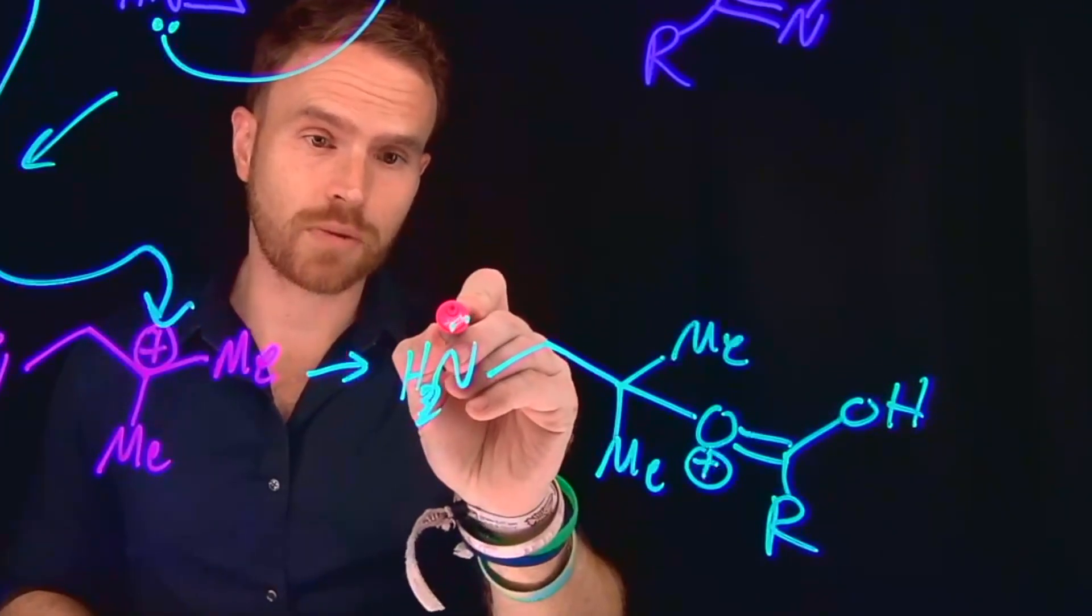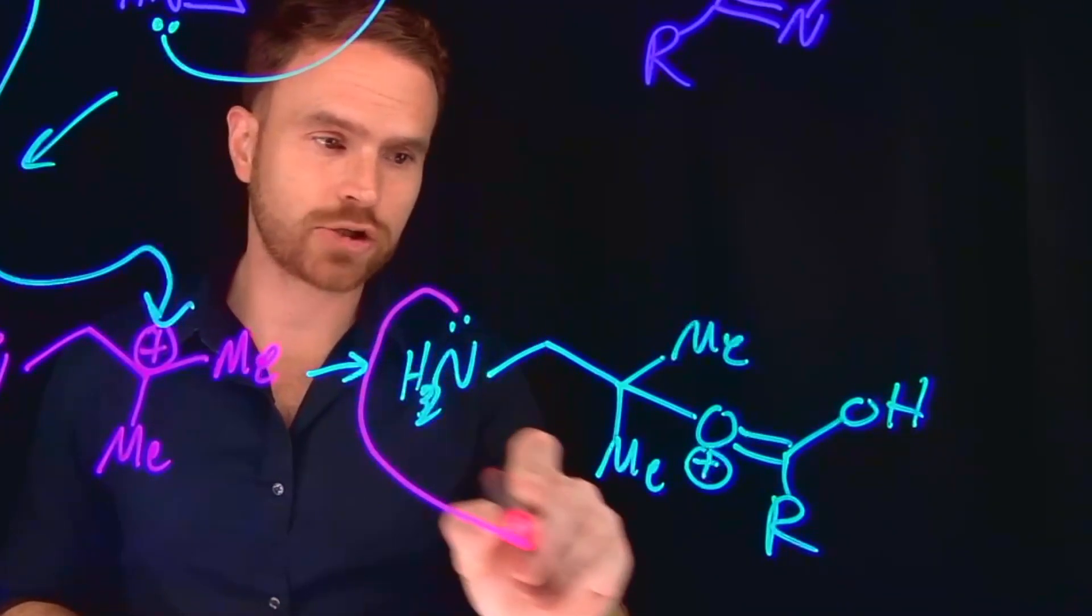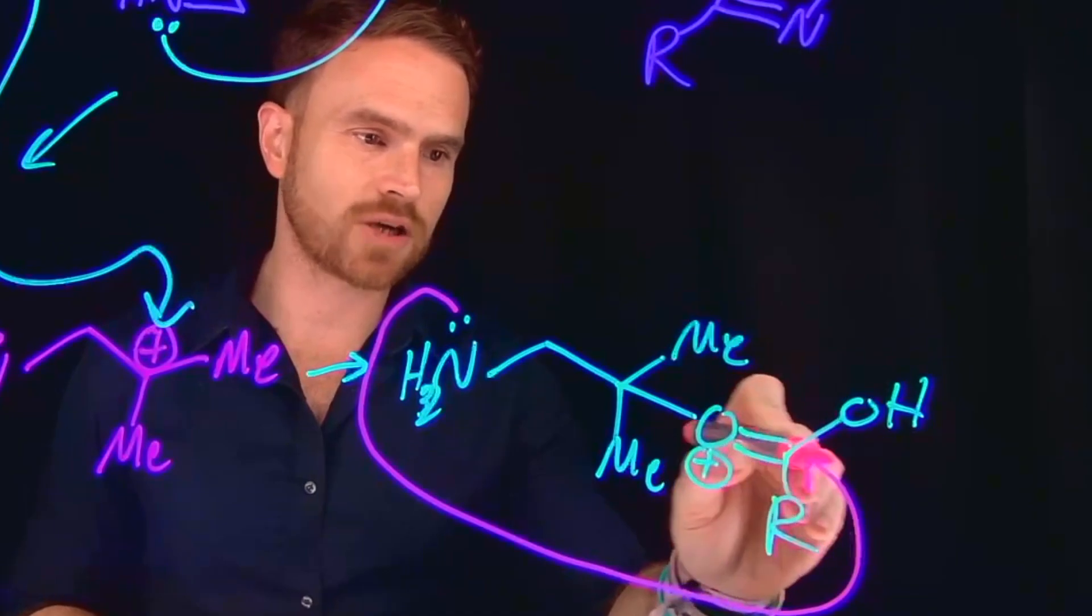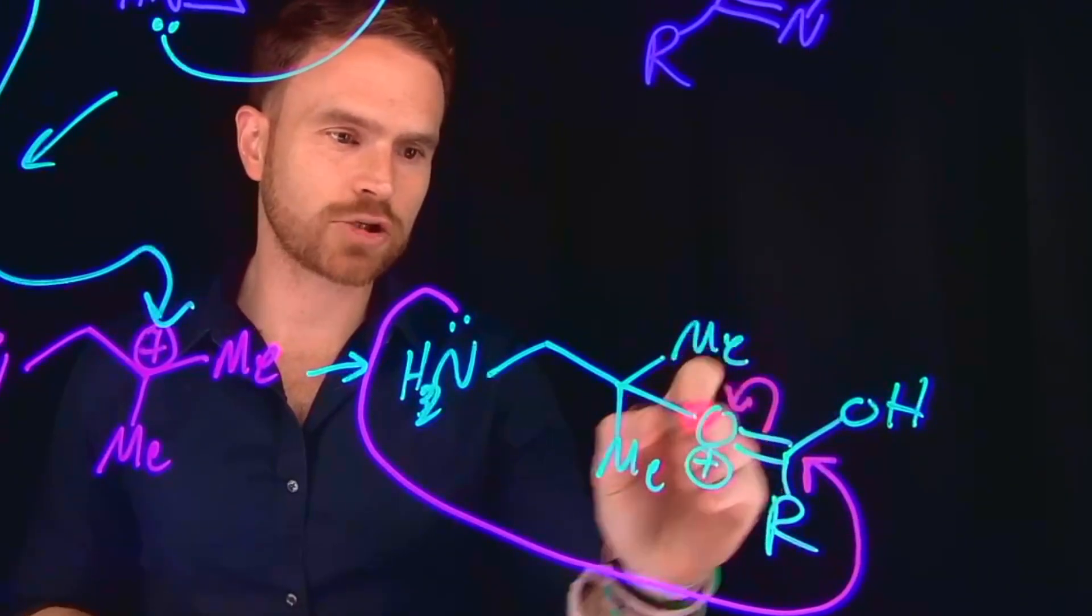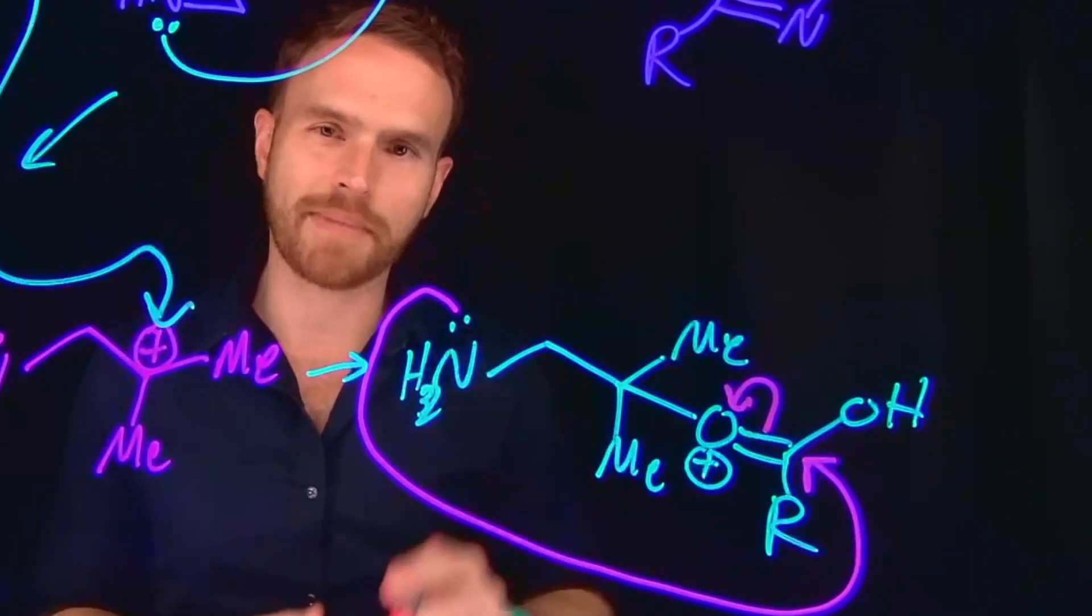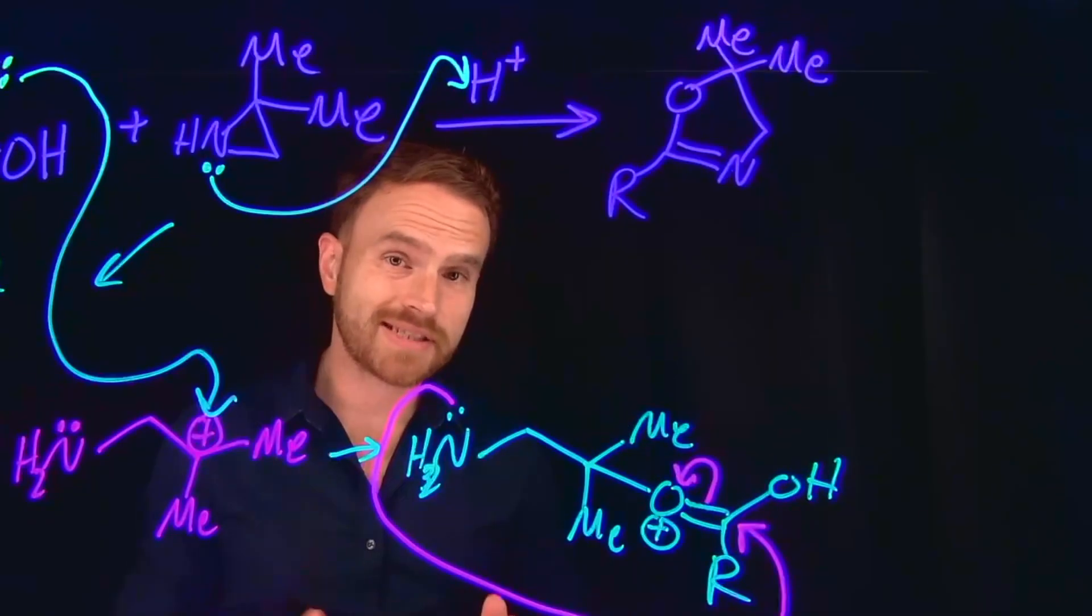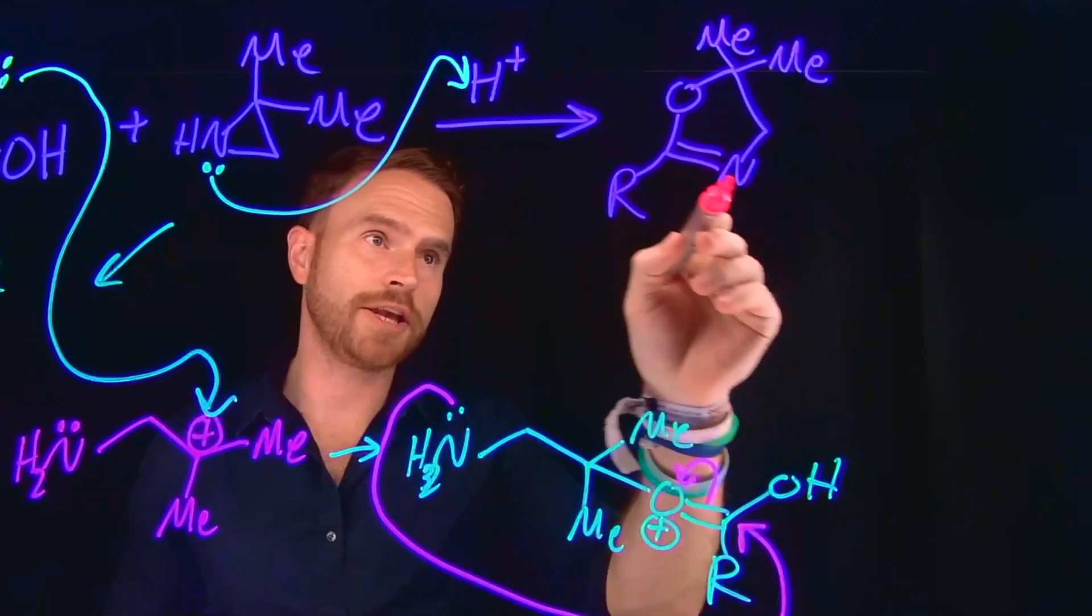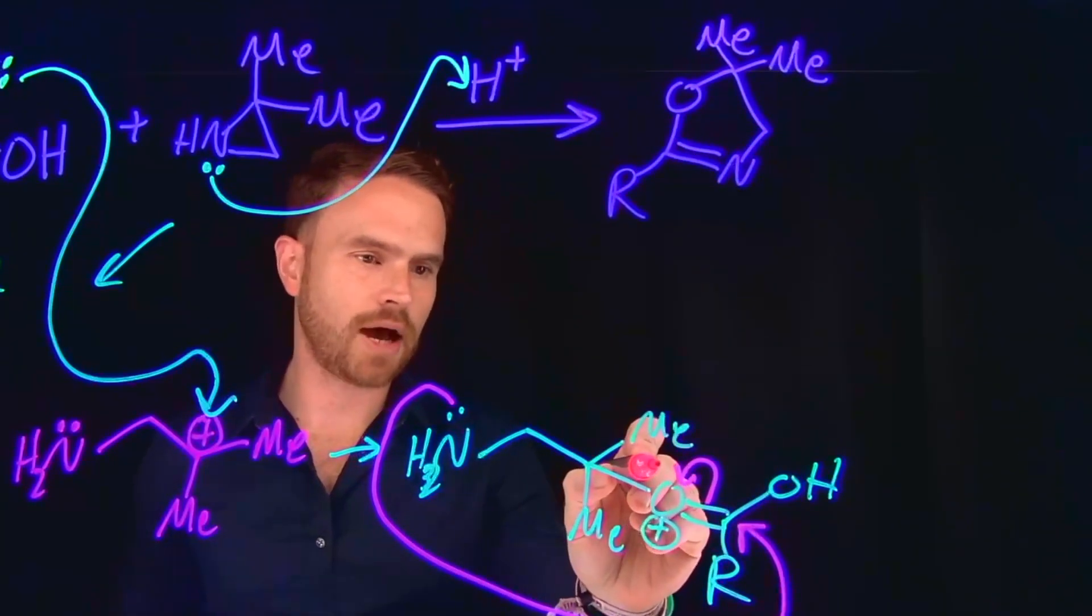So in fact, the next reaction will be this lone pair of electrons from nitrogen will come and attack this carbonyl carbon position, kicking up these pi electrons in order to make this a neutral oxygen. But notice now this is going to make a positively charged nitrogen. And this is actually how we close the ring to end up with this five-membered ring.